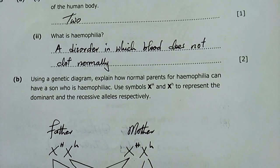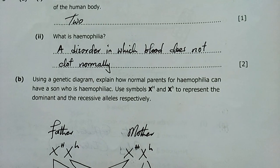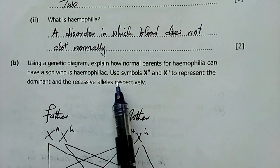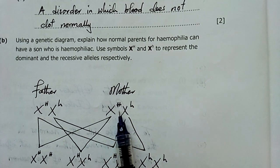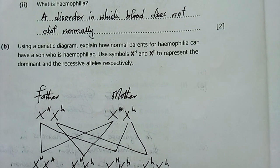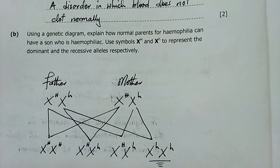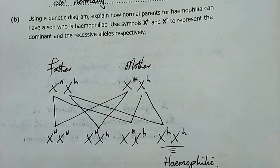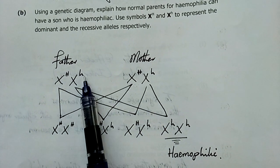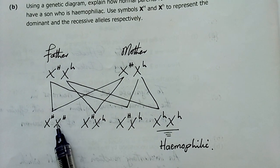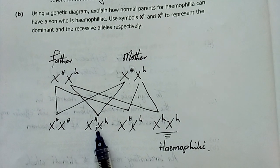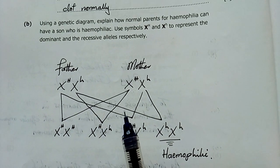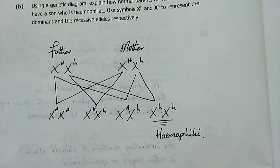Part (b) asks to use a genetic diagram to explain how normal parents can have a hemophilic son, using X^H and X^h for dominant and recessive alleles. The parents must be carriers — heterozygous dominant. When crossed, the offspring include a hemophilia-free individual, a carrier, and a hemophilic son. This is the only way normal parents can produce a hemophilic child.